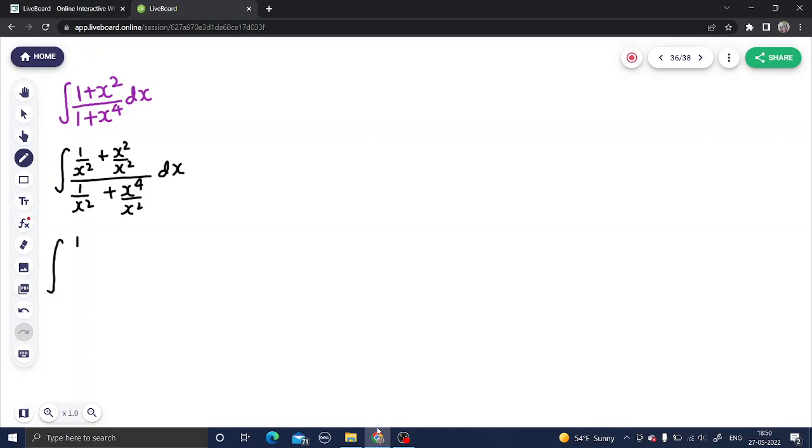Now in numerator you will get 1 from here and 1 upon x² divided by, you will get 1 upon x² plus x², and then the dx.